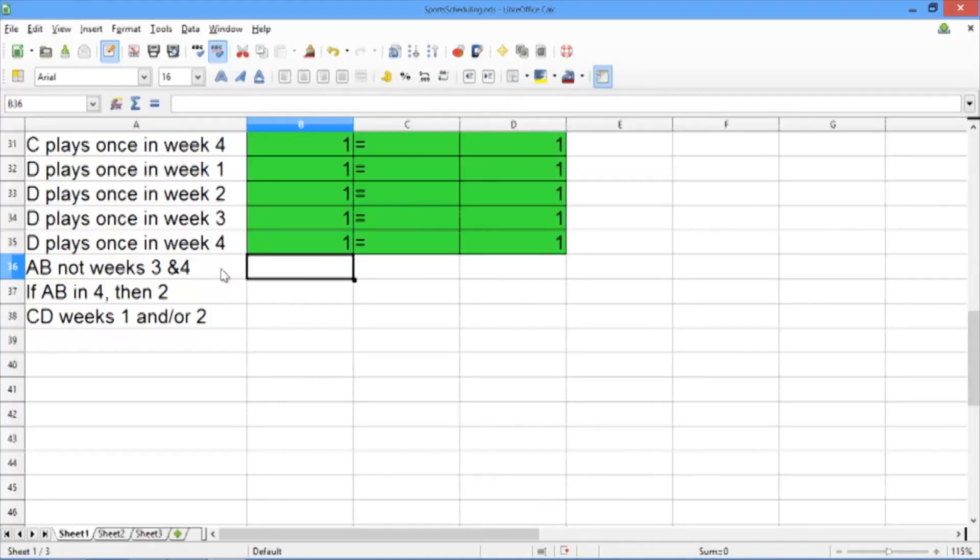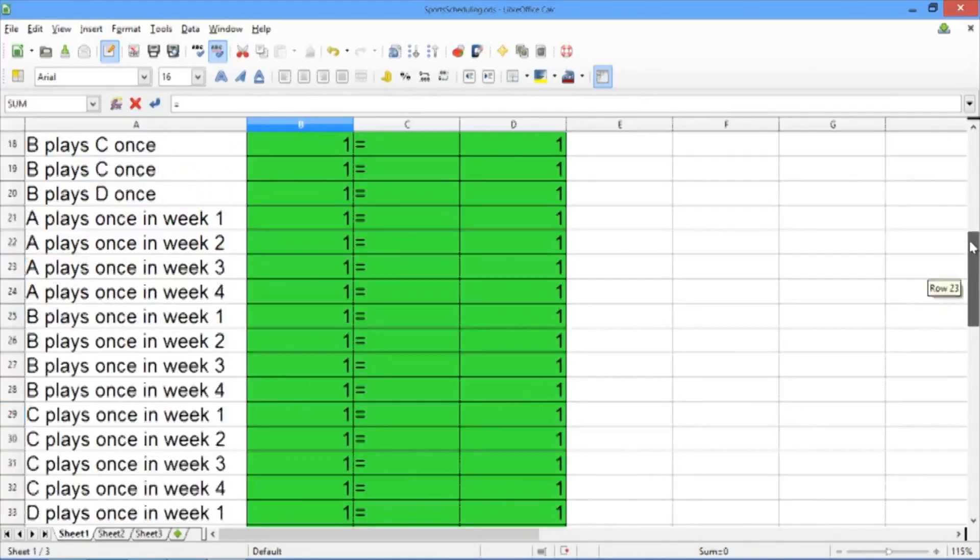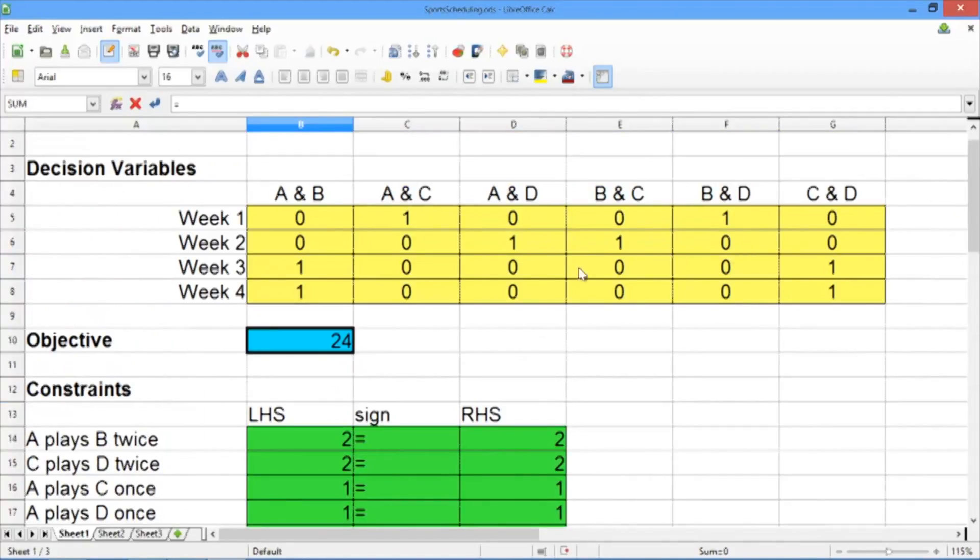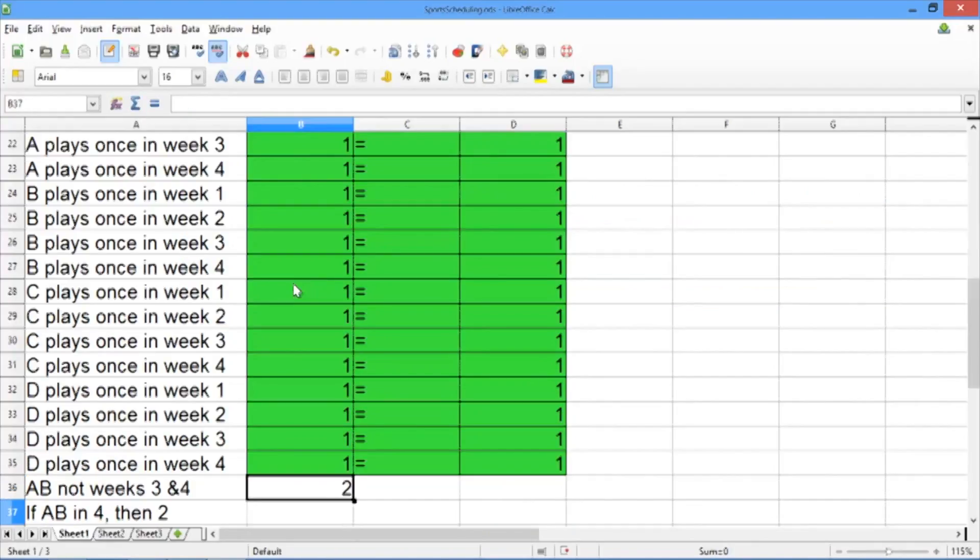So to add the first constraint, our left-hand side should be equal to the sum of the variables for A and B in weeks 3 and 4. Our sign is less than or equal to, and our right-hand side is 1.